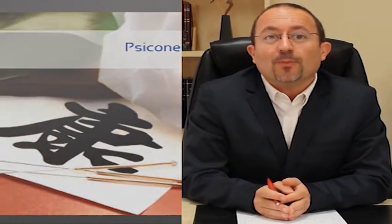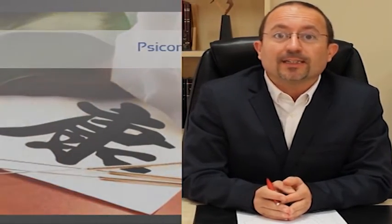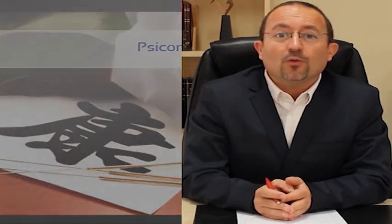Luego hablaremos del bushing en el siguiente módulo, es decir, los cinco elementos y la relación que estos tienen con la cibernética, y la cibernética y la relación que tiene con el sistema inmunológico. Es decir, todo es una red y hay que entenderla como tal.